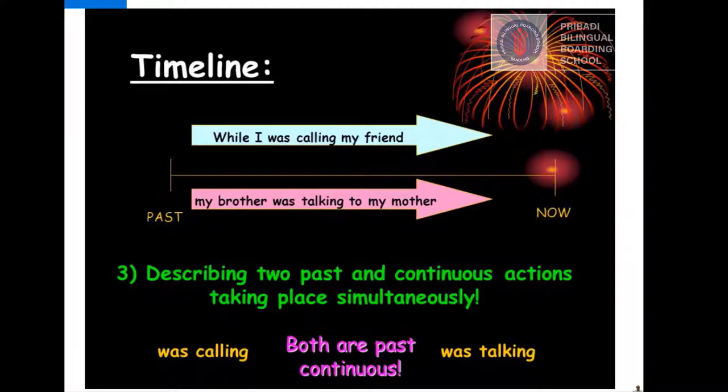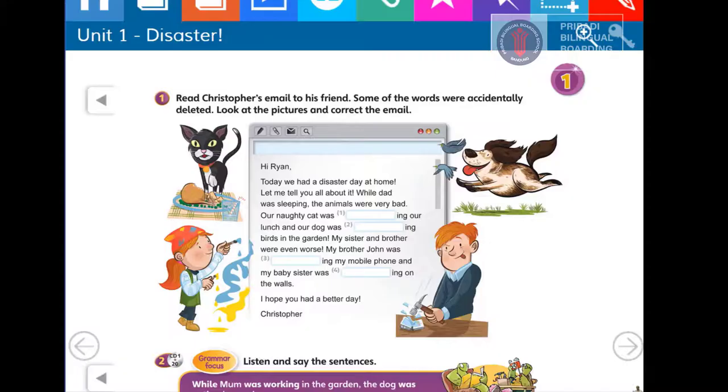Okay, now you can open your students book, page 13. You can see the first one. Read Christopher's email to his friend. Some of the words were accidentally deleted. Look at the pictures and correct the email.